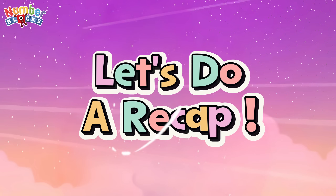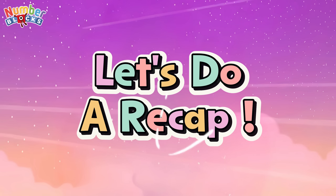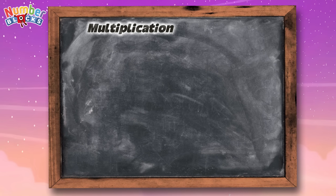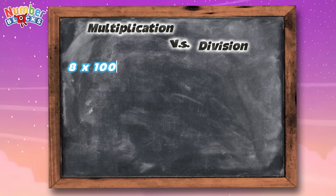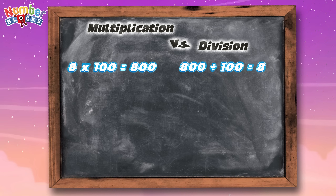Let's do a recap! Let's go! Multiplication versus division: eight multiplied by one hundred is equal to eight hundred. In division, eight hundred divided by one hundred is equal to eight.